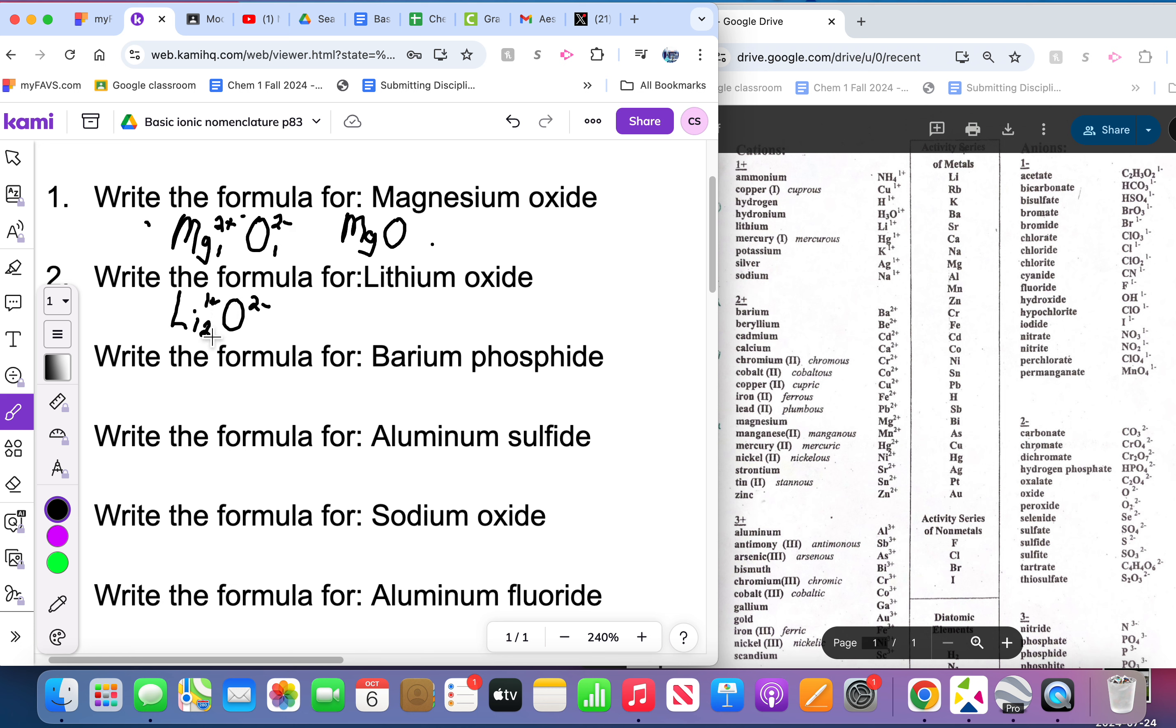I'm going to put the two here and the one there because two positive ones cancels out one two minus. If you remember the card thing that we did in class with the blocks of wood, one two minus will cancel out two positive ones.